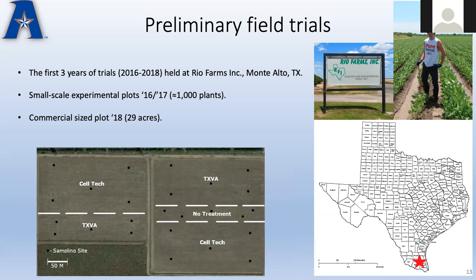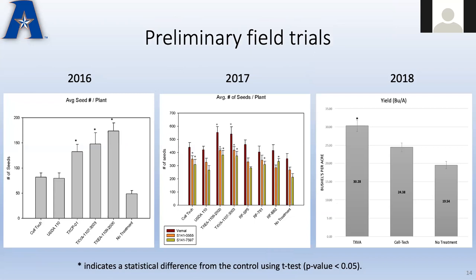Our last year at Rio Farms was our first commercial-size plot — about 29 acres. This was the first year I joined the program. We had some randomization, though it was not a randomized complete block design — it was just our first commercial-size plot to see if we could make it work. In the first year, 2016, we saw increases in seed number for all three strains we had isolated, compared to no treatment, USDA 110 (the model organism), and Celltech (the mainstream commercial inoculant).